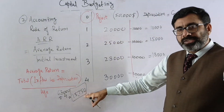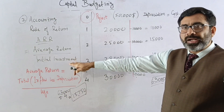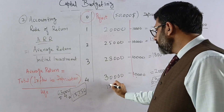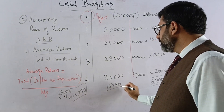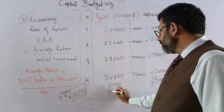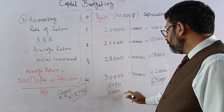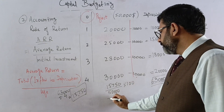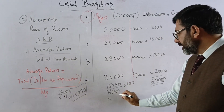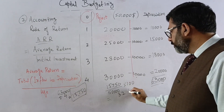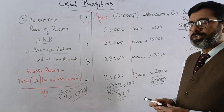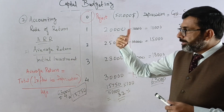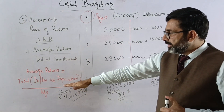Now the average return is divided by the initial investment: 15,750 divided by 50,000, multiplied by 100. This gives approximately 32%. So 32% is the Accounting Rate of Return — we calculated the average return and divided it by the initial investment.